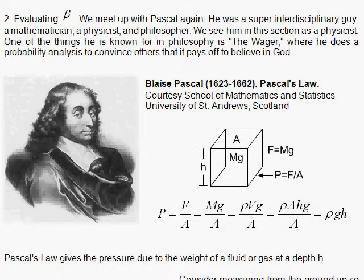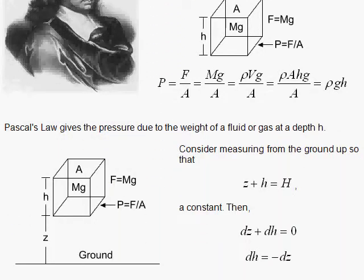So let's look at applying this as a reference from the ground. So here, if I go from the top of the atmosphere down to the ground, where this is a constant, capital H, Z plus H, then DH, the change in the depth as I go down, will have a decreasing effect on Z. So DZ plus DH is equal to 0, so DH, when H increases, Z decreases, so DH is minus DZ.